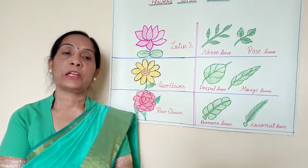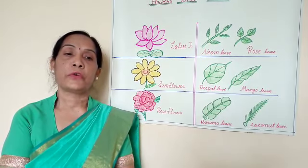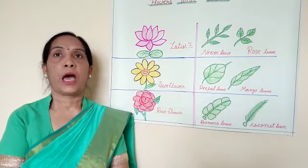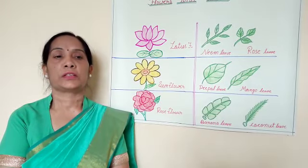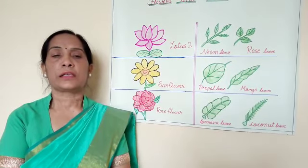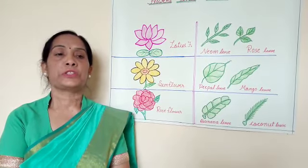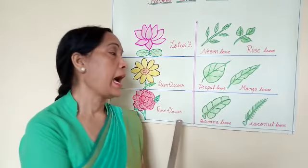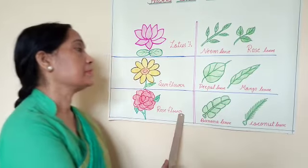And very big leaves, for example, banana and coconut. Let's see some pictures of flowers and leaves.